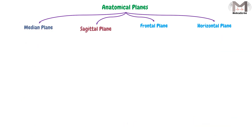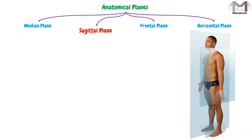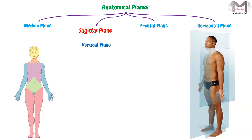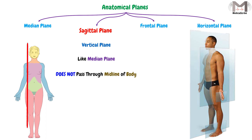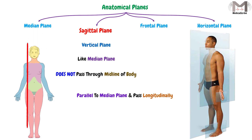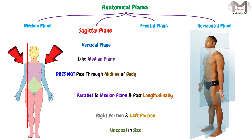The second plane is the sagittal plane. This plane is also a vertical plane that passes through the body, and it is almost like the median plane. But what makes it different from the median plane is that it does not pass through the midline of the body. So it will be parallel to the median plane and pass through the body longitudinally, but it will not pass through the midline. In this case, it will also divide the body into a right portion and a left portion, but they will be unequal in size.